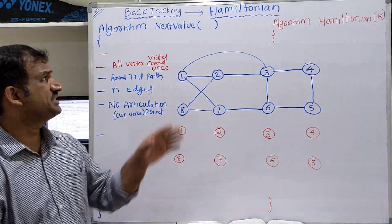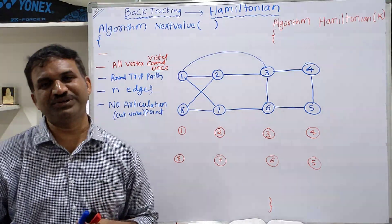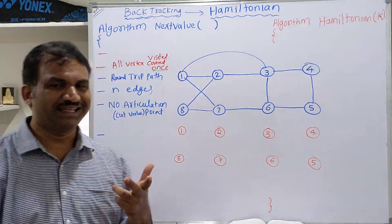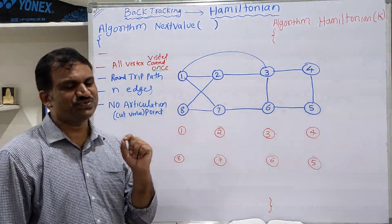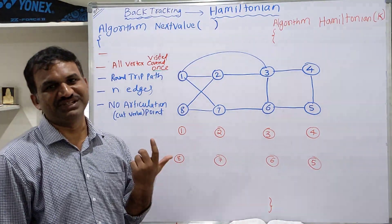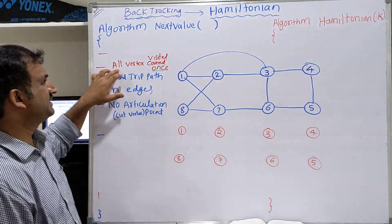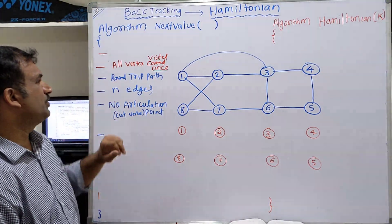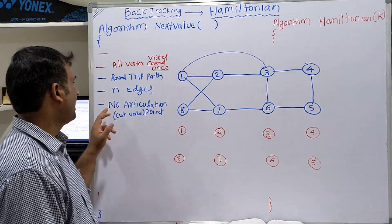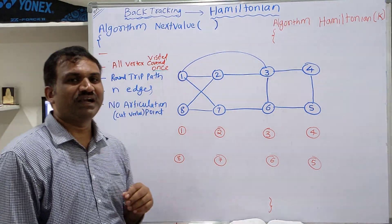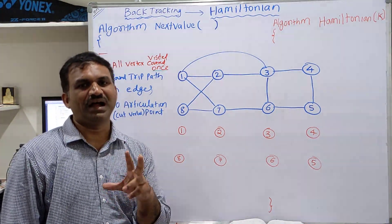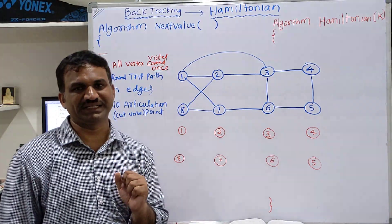Hamiltonian Cycle using backtracking. A Hamiltonian Cycle is a round trip path in a given graph where each vertex is visited only once, with n edges and n vertices. We don't have a Hamiltonian Cycle if the graph has an articulation point or cut vertex.